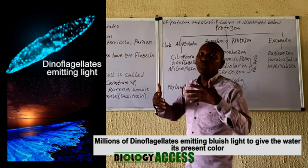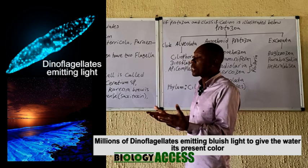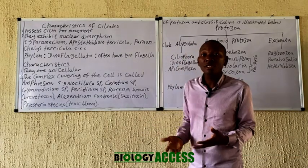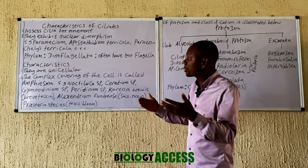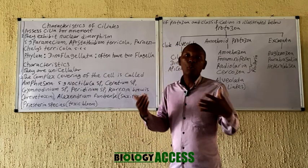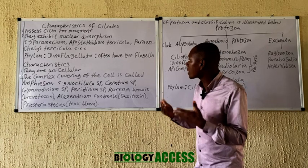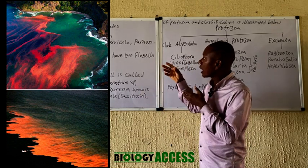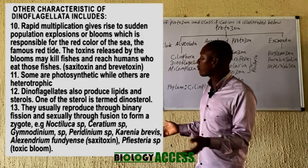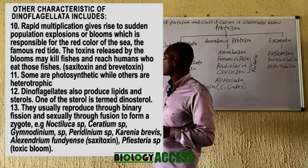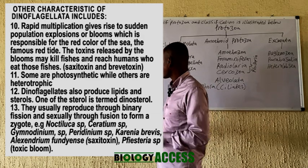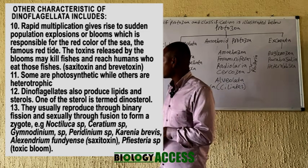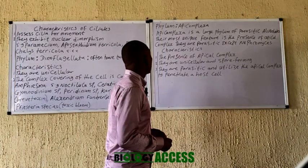Dinoflagellata are known for bioluminescence — they produce and emit light, giving rise to the colors sometimes seen in the ocean, such as red or blue tides. Some produce neurotoxins or saxitoxin, and various forms of toxins in the aquatic environment which can be harmful to aquatic organisms. Examples include Noctiluca species, Ceratium species, and Alexandrium, which possesses saxitoxin and produces toxic algal blooms.